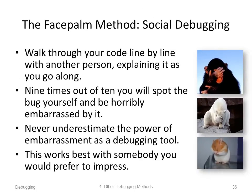There's also what I call the facepalm method — a big shout-out to Ian Bogost at Georgia Tech. The facepalm method is a method of social debugging. You grab a friend, sit them down in front of the code, walk through your code line by line with that person, explaining it as you go. Nine times out of ten, you will spot the bug yourself and be horribly embarrassed by it: 'Here in this line I do that — oh my god, this is wrong. How did I ever do that?' Never underestimate the power of embarrassment as a debugging tool. This works best with somebody you'd prefer to impress, but it even works with people who don't understand code, because you're going to do the spotting yourself.